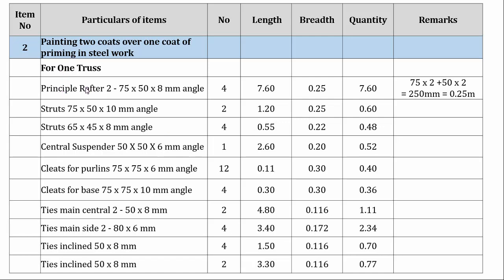We have already done the calculation for the principal rafter. If you see the previous video, we have calculated the numbers and length. The length will remain the same; only the breadth has to be added. The unit of measurement of painting is square meters. For an angle of 75 by 50, the breadth is 75 multiplied by 2 plus 50 multiplied by 2, which equals 250 mm, that is 0.25 meters.